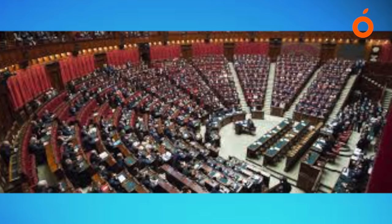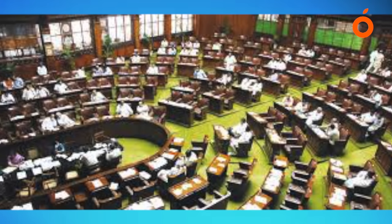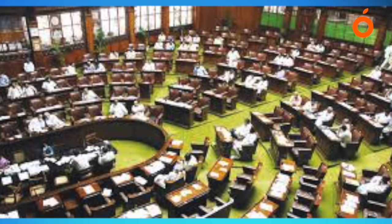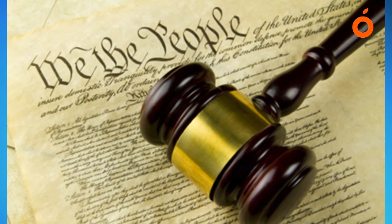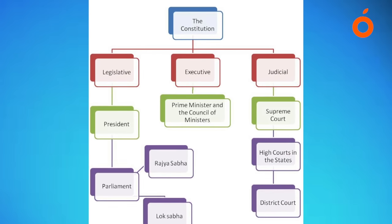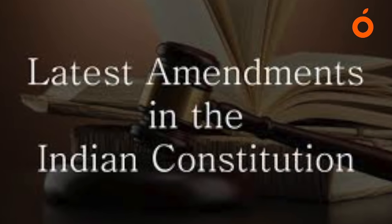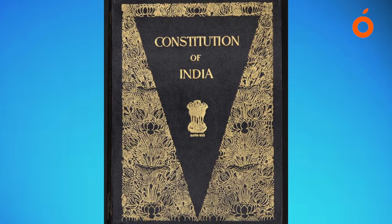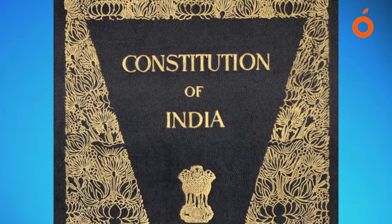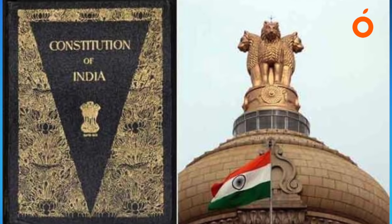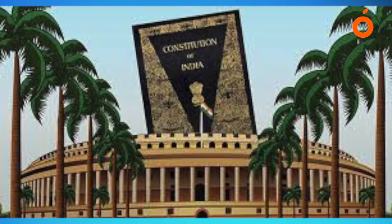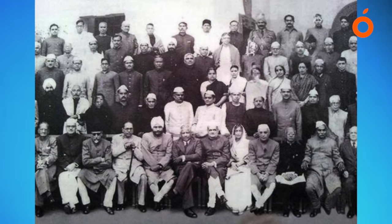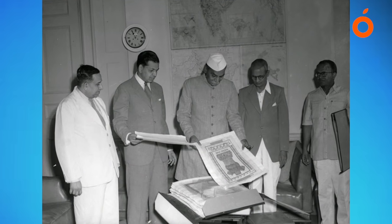The 97th Amendment added the words 'cooperative societies' after the word 'unions' in Article 19(1)(c), and also added Article 43B for promotion of cooperative societies, and added Part 9B on cooperative societies. The amendment's objective is to encourage economic activities of cooperatives, which in turn help progress of rural India. It is expected to ensure autonomous and democratic functioning of cooperatives as well as accountability of the management to the members and other stakeholders.